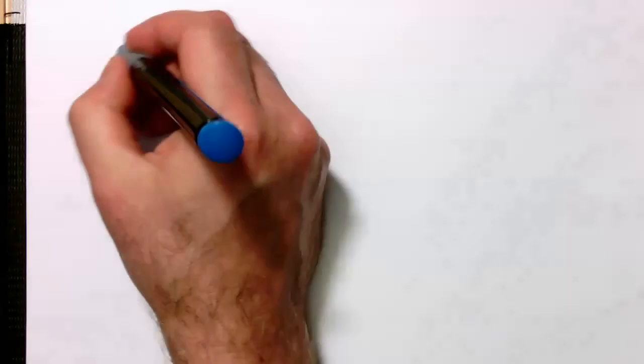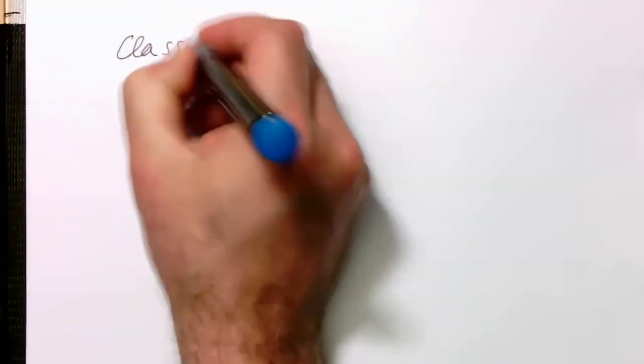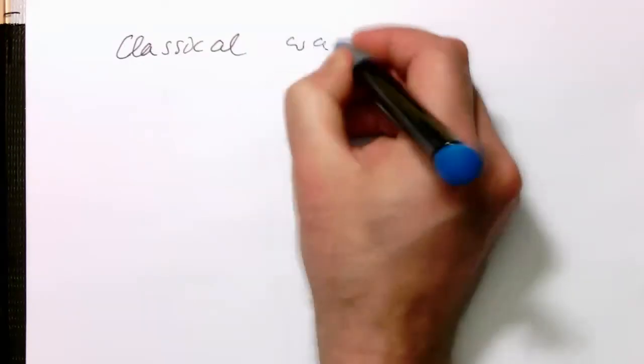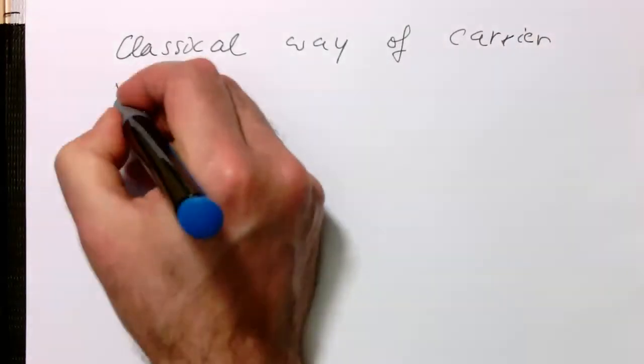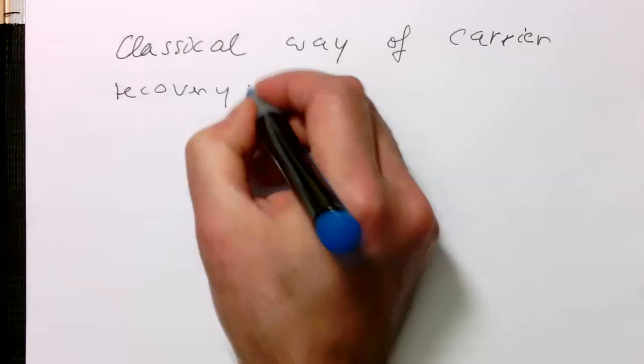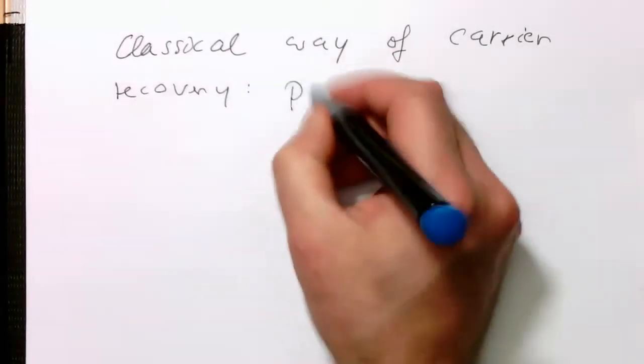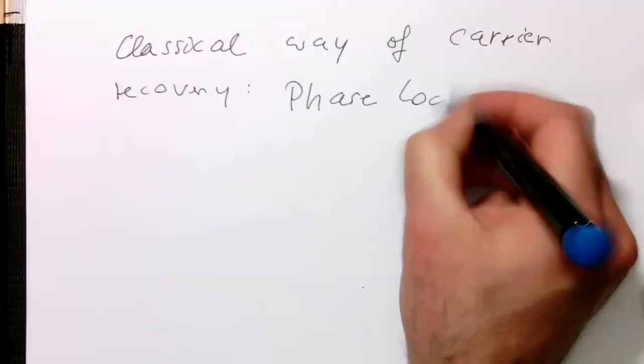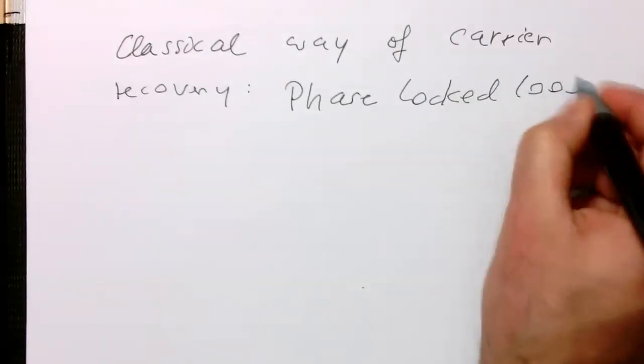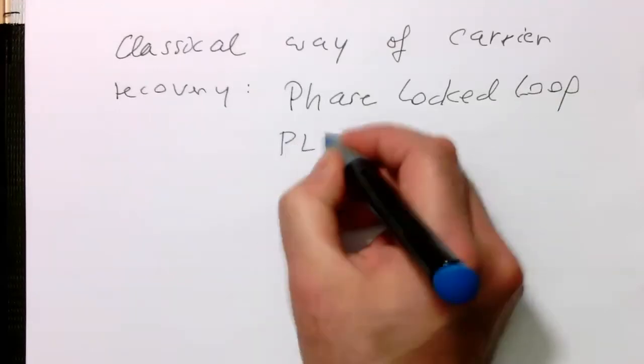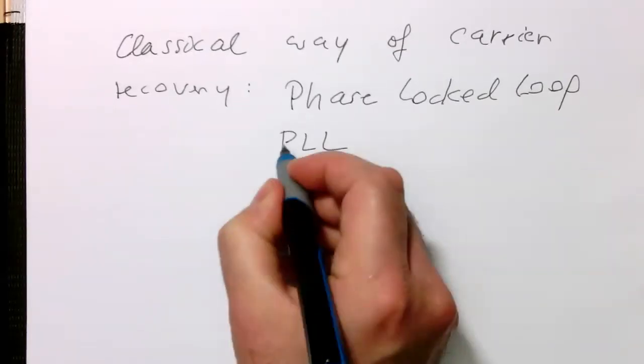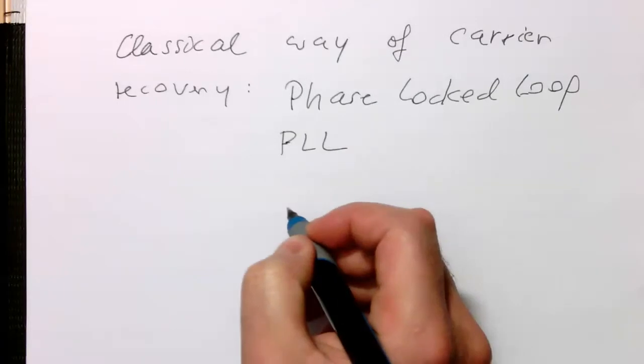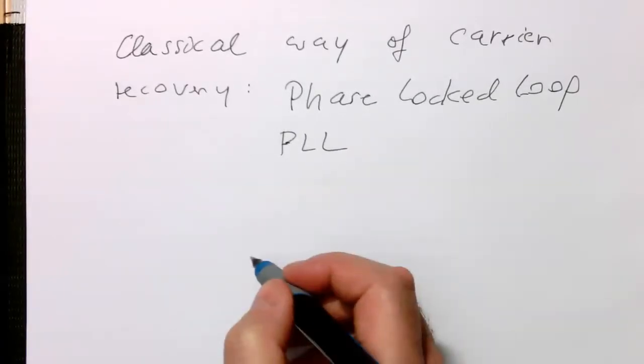The classical way of carrier recovery is a phase-locked loop, or PLL. A phase-locked loop is essentially a feedback system which locks on a sine wave sent into it. Let's have a look at the general circuit diagram of a PLL.